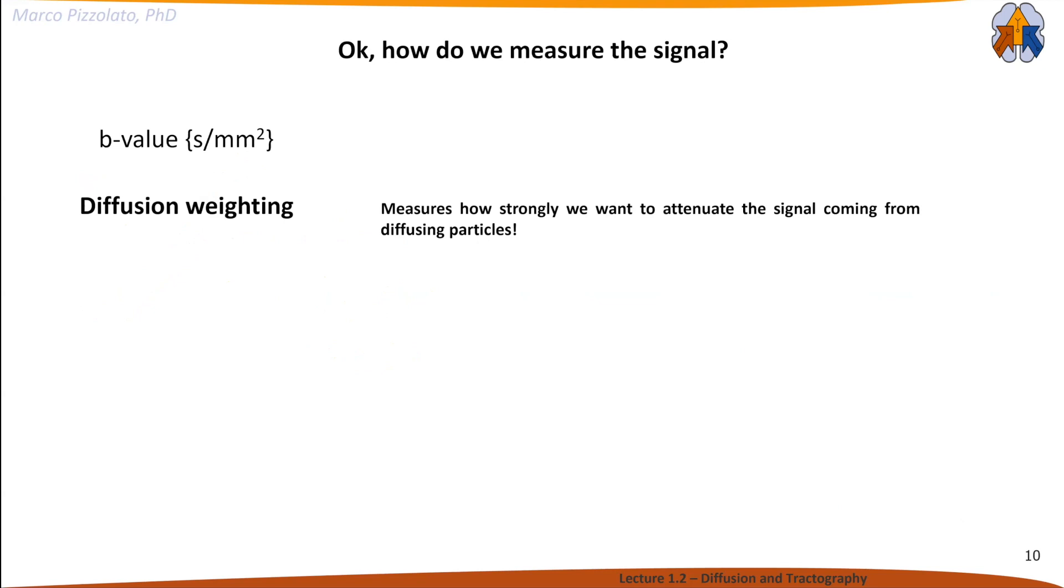How do we measure this signal? I'll briefly mention diffusion weighting, which you'll find in the metadata of images you process. Diffusion weighting is typically described by the b-value, with units of s/mm², the reciprocal of the diffusion coefficient. This b-value measures how strongly we want to attenuate the signal coming from diffusing particles. This 90-degree relationship is true only if we tell the machine to use diffusion weighting.